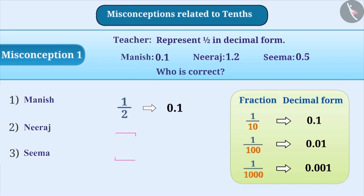Some students misunderstand that while representing fraction in decimal form, the numerator is written before the decimal point and the denominator is written after the decimal point. Both these answers are wrong, so option 1 and 2 are incorrect.